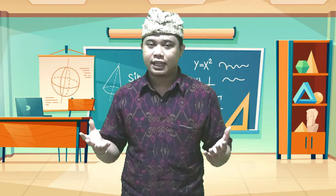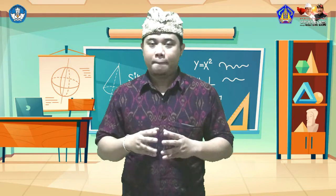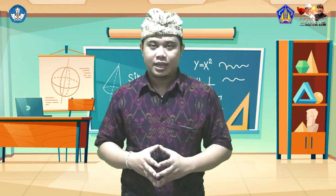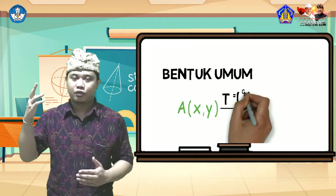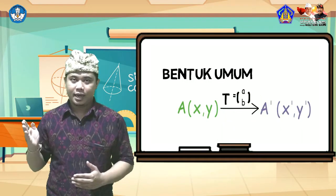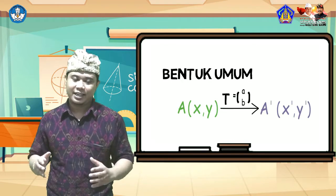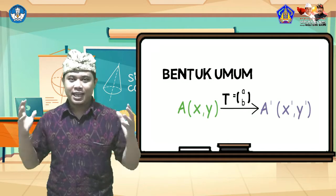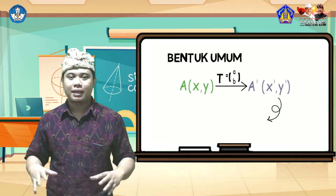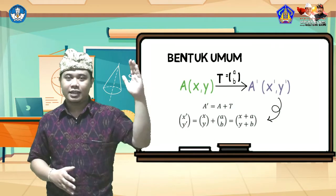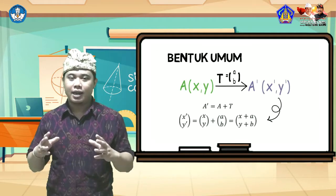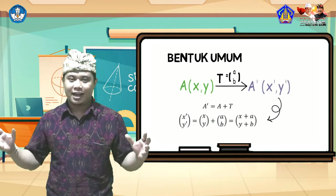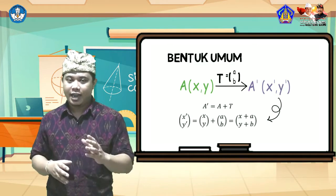Berdasarkan ilustrasi tadi, maka kita bisa rumuskan secara umum transformasi geometri yang berupa translasi. Yaitu, A yang berupa titik (x,y) kita translasikan berdasarkan matriks transformasi T yaitu (a,b), maka akan mendapatkan bayangannya yaitu A aksen (x',y'). Yang bisa kita peroleh dalam melakukan operasi matriks, di mana matriks A aksen yang terdiri dari (x',y') akan sama dengan A(x,y) ditambah dengan T(a,b), maka akan sama dengan (x+a, y+b).